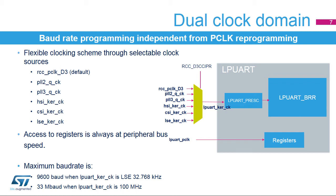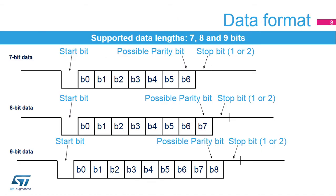The maximum baud rate that can be reached is 9,600 baud when the clock source is LSE, and 33 megabaud when the clock source is at 100 MHz. The frame format consists of a set of data bits, in addition to bits for synchronization, and optionally a parity bit for error checking. A frame starts with one start bit, where the line is driven low for one bit period.